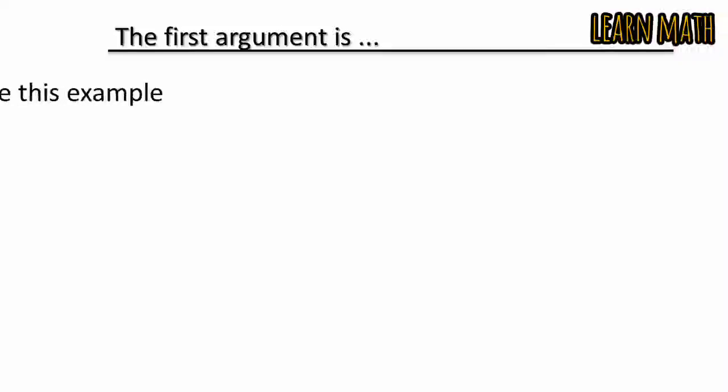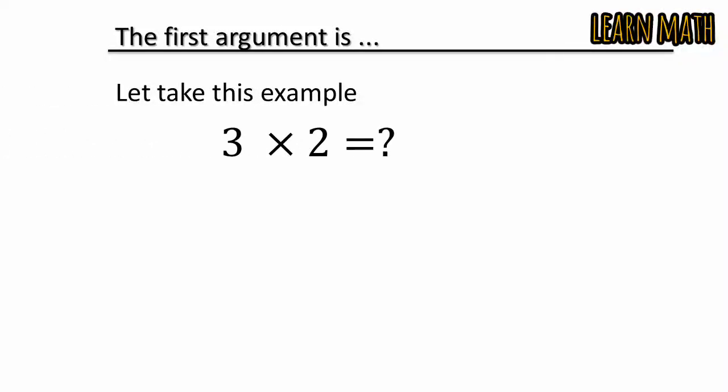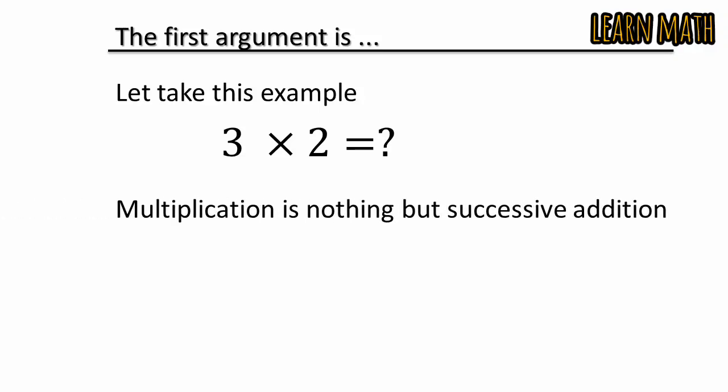The first argument is: let's take this example, 3 multiplied by 2. Multiplication is nothing but successive addition, so we can write 3 × 2 equals 2 + 2 + 2, meaning 3 times 2, which equals 6.